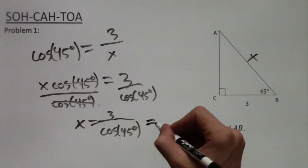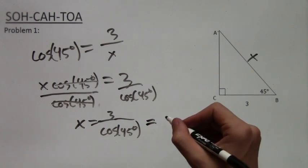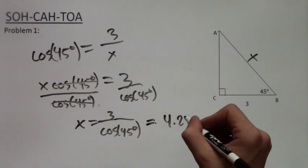X equals 3 over cosine of 45 degrees. And this equals, this is just something I plug into my calculator, this equals 4.24.